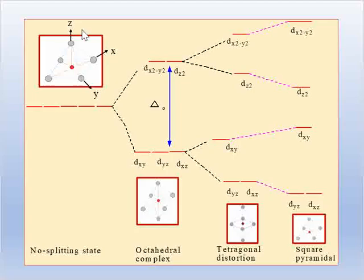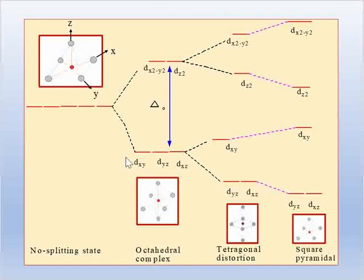In square pyramidal geometry, one ligand is not present in the z direction. If we start from the octahedral geometry, in an octahedral complex the t2g set orbitals will have lower energy and the two eg orbitals will have higher energy.